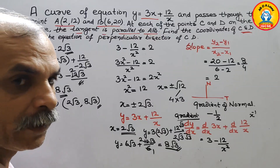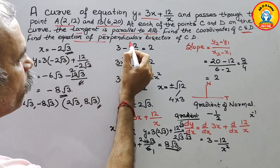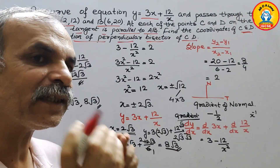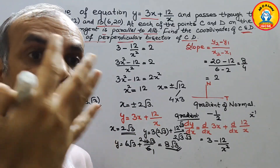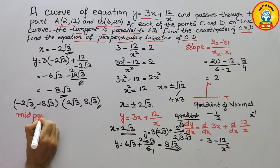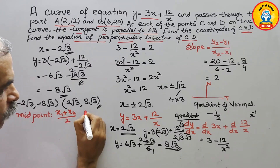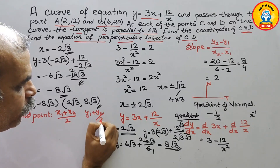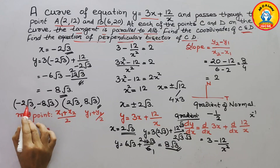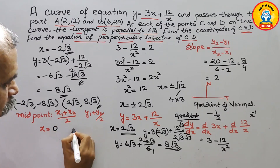So these are the coordinates of C and D. Next, we need to find the equation of the perpendicular bisector of CD. The perpendicular bisector passes through the midpoint. The midpoint x-coordinate is (-2√3 + 2√3)/2 = 0, and the y-coordinate is (-8√3 + 8√3)/2 = 0. So the midpoint is (0, 0).